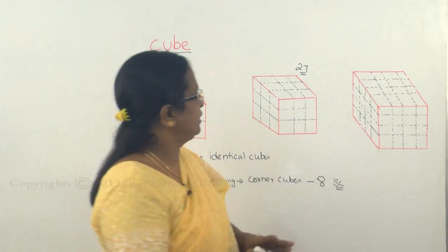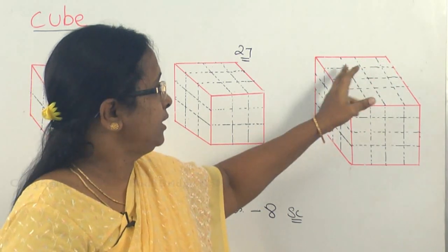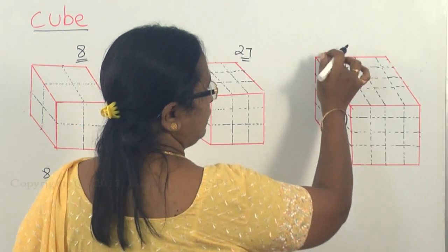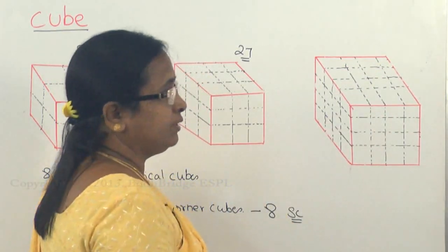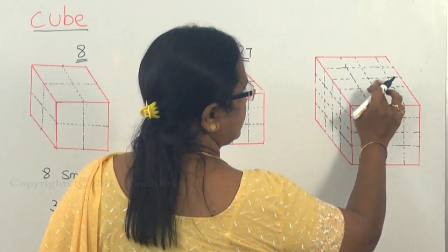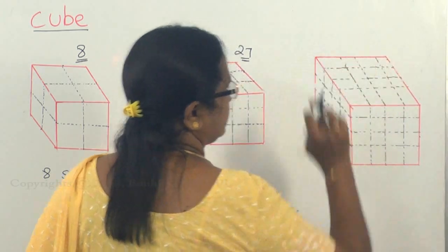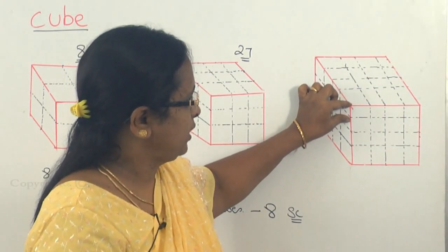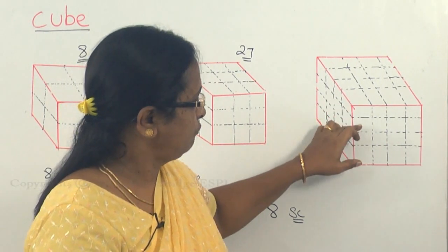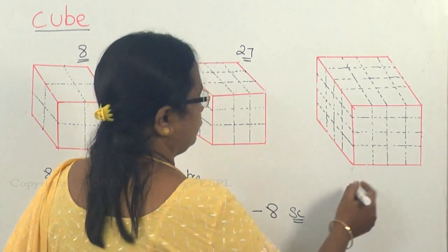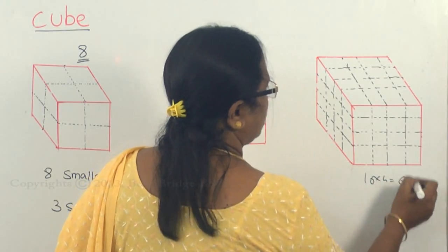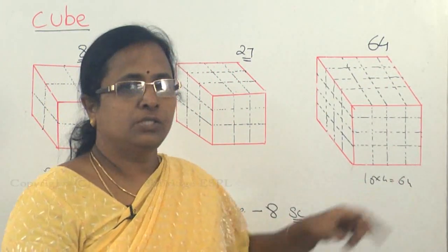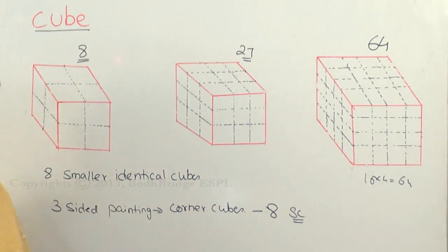In the next case with three cuttings, the number of divisions made is four. Four into four you have sixteen smaller faces in one layer, and with four layers that gives sixteen into four — totally sixty-four smaller cubes. But again here you have only eight corners in the larger cube. So therefore there are eight smaller cubes which are three-sided painted.